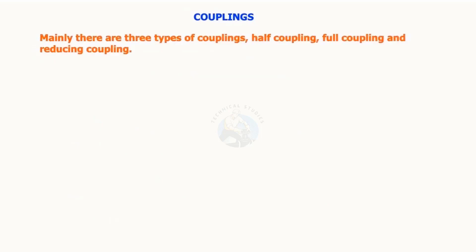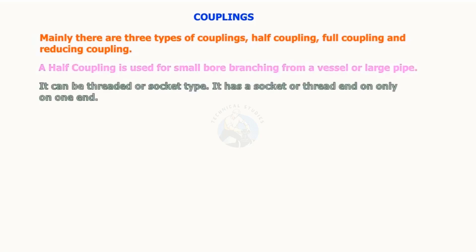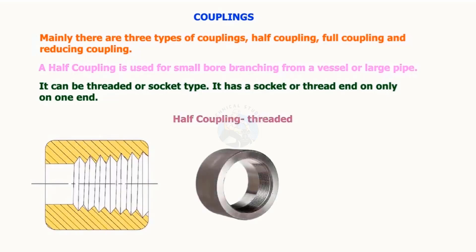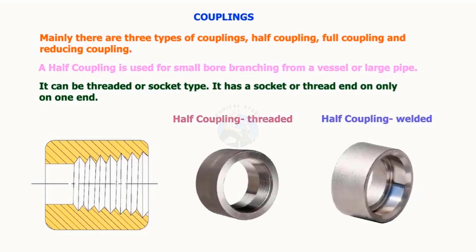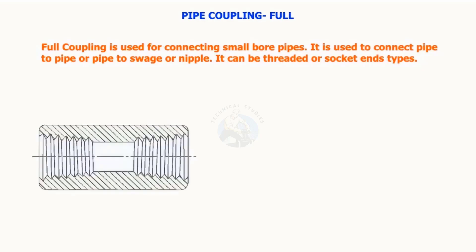Mainly there are three types of couplings: half coupling, full coupling, and reducing coupling. A half coupling is used for small bore branching from a vessel or a large pipe. It can be threaded or socket type, and has a socket or thread end only on one end. Full coupling is used for connecting small bore pipes. It is used to connect pipe to pipe, or pipe to swage or nipple, and can be threaded or socket end types.